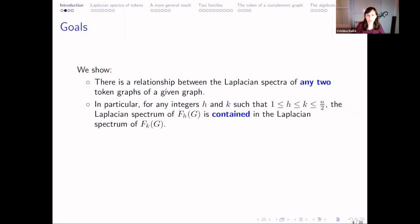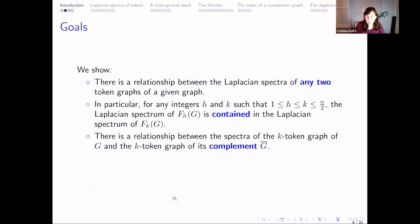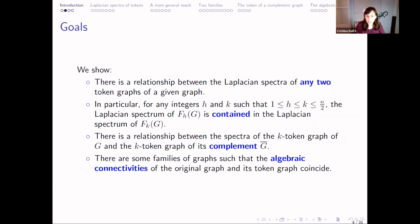In particular, we want to show that given two integers — one smaller than the other, because if they are equal the result is trivial — the Laplacian Spectrum of the smaller token is contained in the Laplacian Spectrum of the bigger token. We also want to show that there is a relationship between the spectra of a k-token graph of a graph and the k-token of its complement. And we are going to give some families of graphs where the algebraic connectivity of the original graph and its token graph are the same.